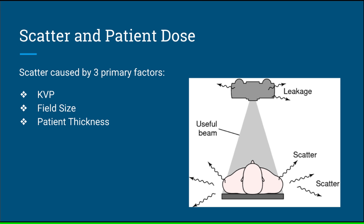Scatter and patient dose: An increase in scatter means an increase in patient dose. The primary factors causing this are an increase in KVP, increased field size, and increased patient thickness. Obviously, patient thickness is not under the technologist's control, but the other two certainly are. Utilizing the appropriate KVP for each exam and always collimating to the anatomy of interest will help in the reduction of the radiation dose the patient is exposed to.